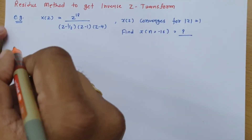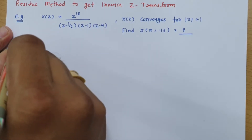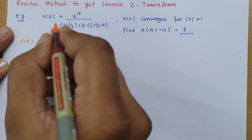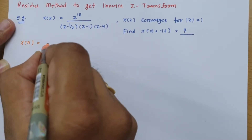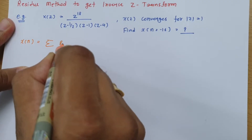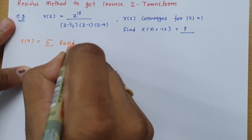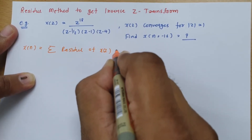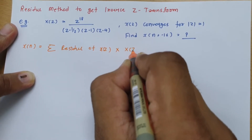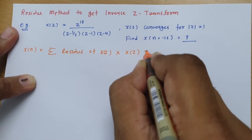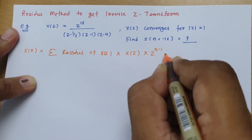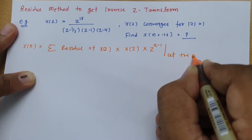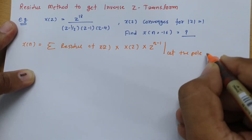The basic formula of the residue method is: X of N equals the summation of the residues of X(Z) multiplied by Z to the power (N minus 1), evaluated at each pole.